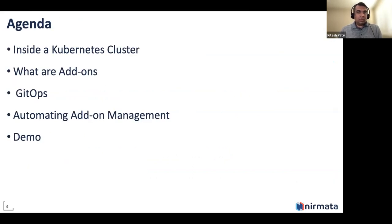In terms of the agenda today, we'll start with what's typically running inside a Kubernetes cluster, and level-set on what we mean by add-ons and how enterprises enable and manage add-ons across multiple clusters. Then we'll look at GitOps, quickly becoming the de facto standard for deploying applications on Kubernetes — its benefits and limitations — and how those limitations can be overcome using add-on management automation.